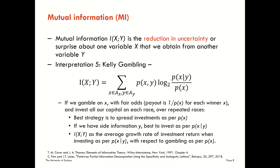The next interpretation regards Kelly gambling. This is a very old interpretation of information theory and a very interesting one. We're going to consider a situation where we are gambling on the outcome of variable x, with a bookmaker who is paying fair odds — giving a payout equal to the inverse of the true probability for each winner x. So if an outcome has a 50% chance of winning, the payout is two-to-one odds.